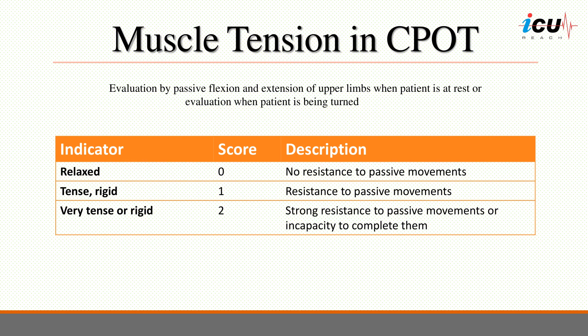Muscle tension is evaluated by performing a passive flexion and extension of the patient's arm when the patient is at rest. During turning, the nurse can easily feel the patient's resistance when participating in the procedure. A score of 0 is given when no resistance is felt during passive movements or the turning procedure. A score of 1 refers to resistance during movements or turning — the patient is tense or rigid. A score of 2 consists of strong resistance, where the nurse may be unable to complete passive movements or the patient resists against movement during turning and may also clench his or her fists.